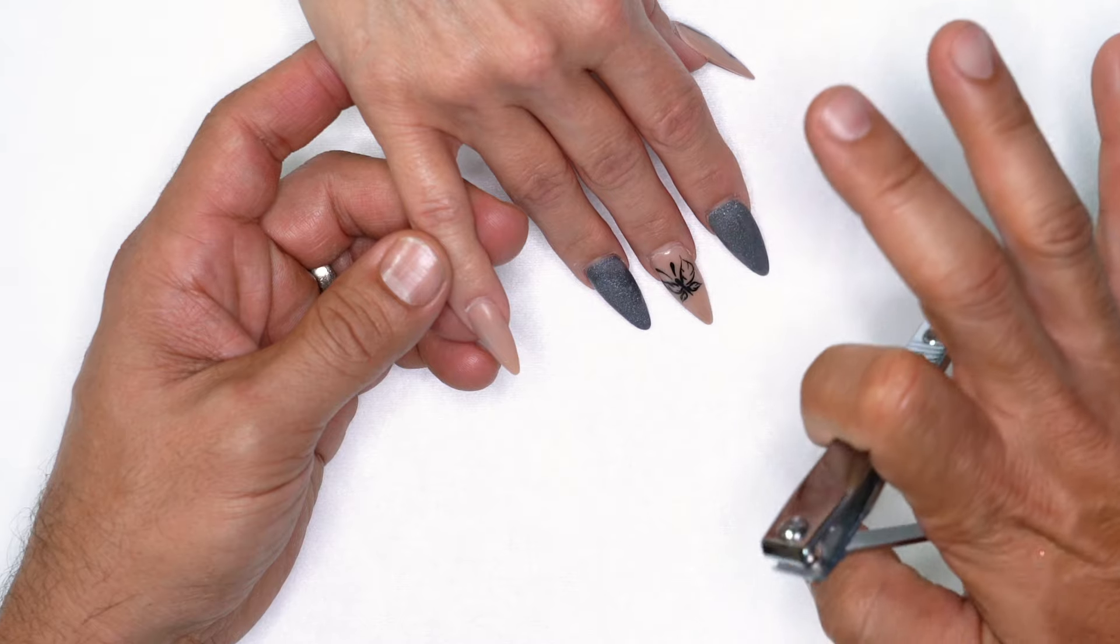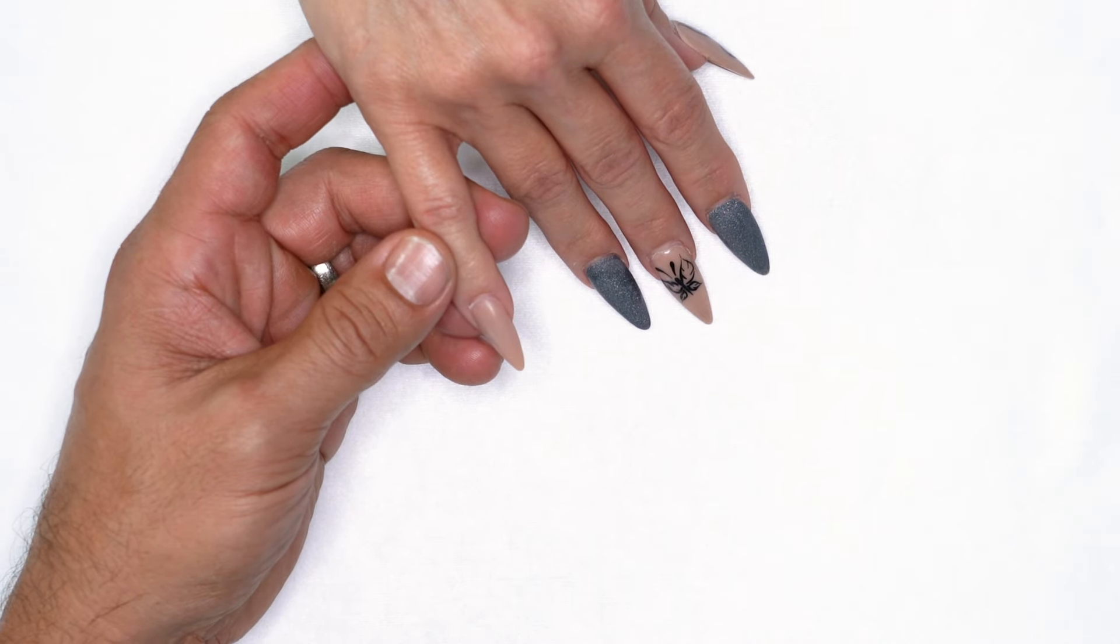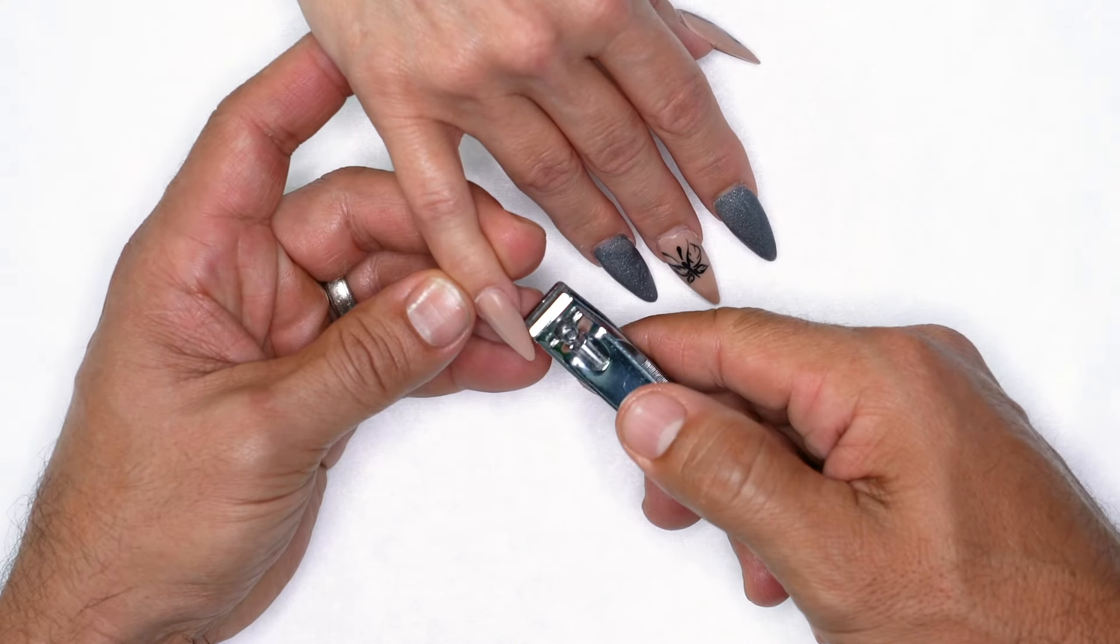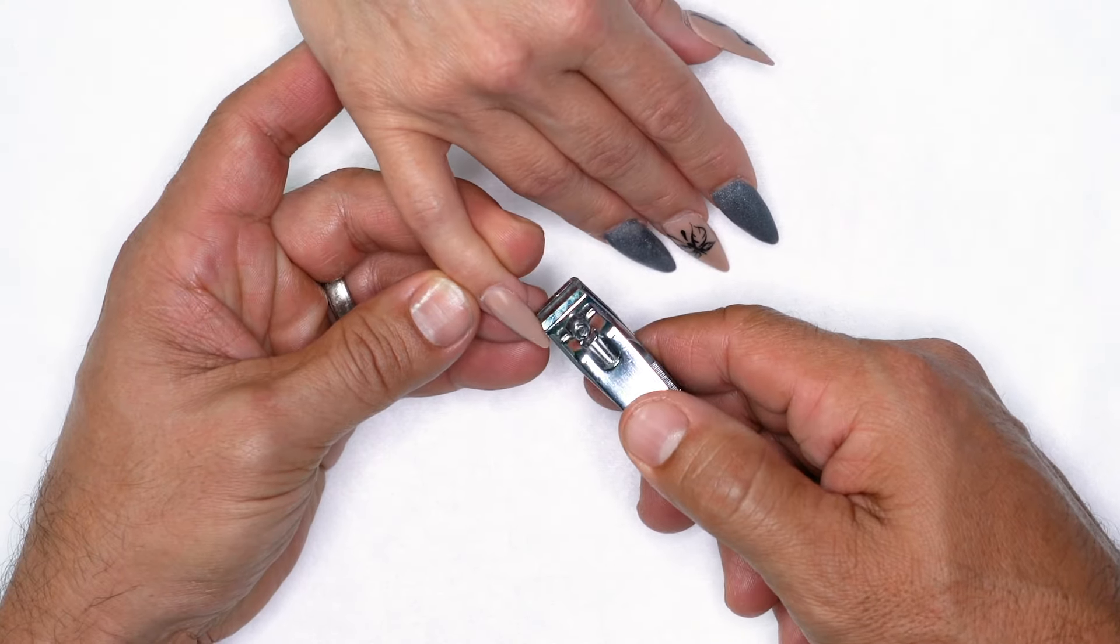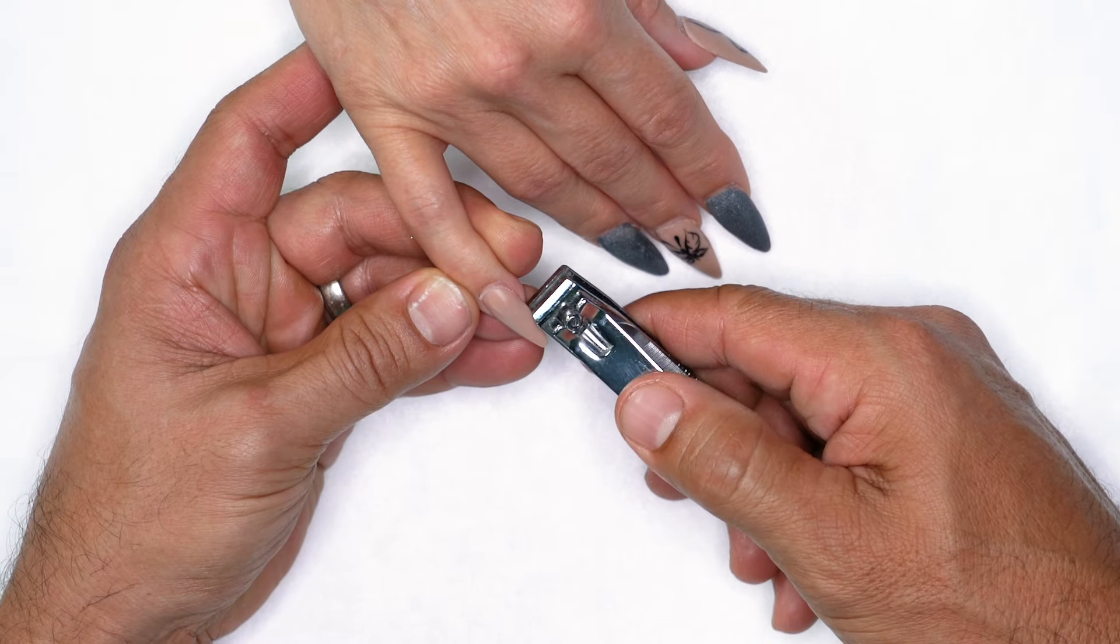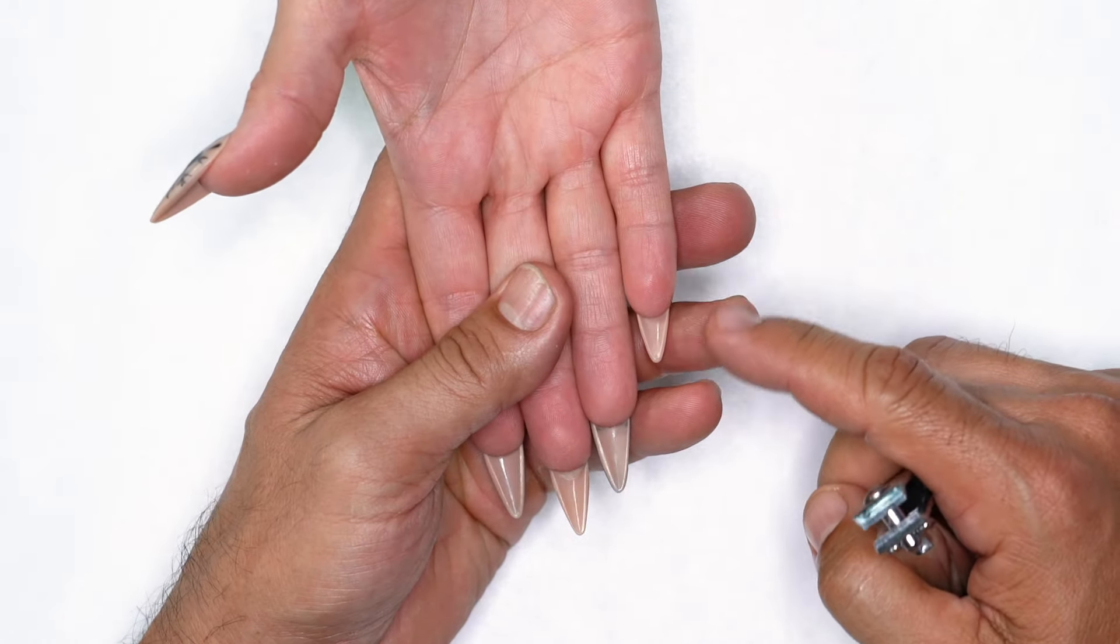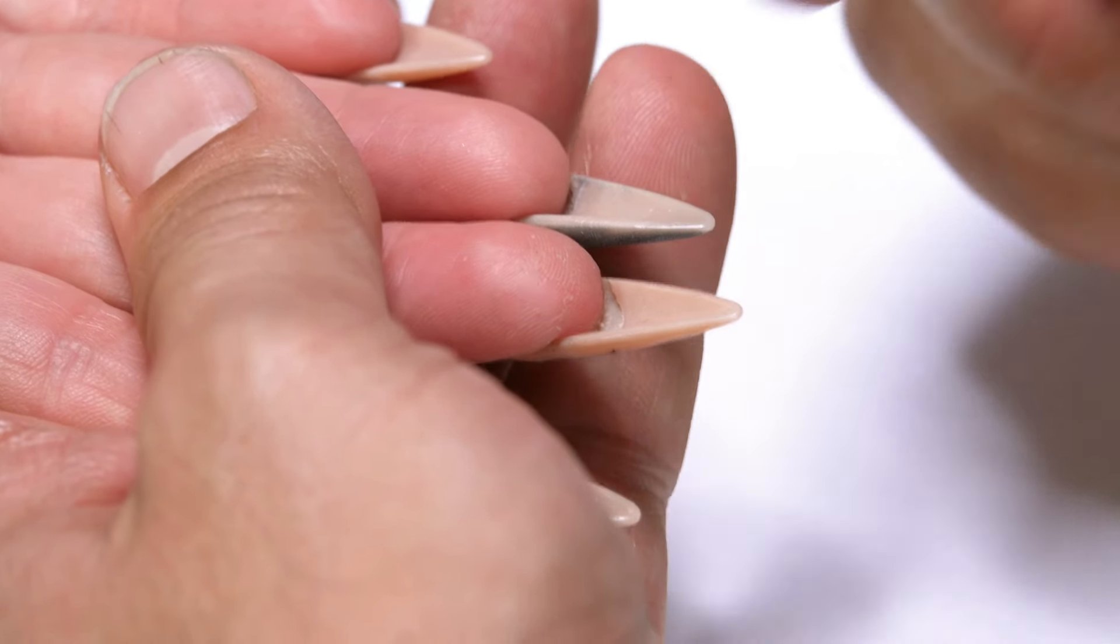Before I actually start taking bulk down, I need to remove the free edges because I don't want to spend so much time taking all of the product down. Now since these are sculptured nails, it's going to be really easy for me to use a straight edge toenail clipper to clip this off. What I want to be able to do is assess underneath to make sure that I'm not getting too close to the hyponychium.